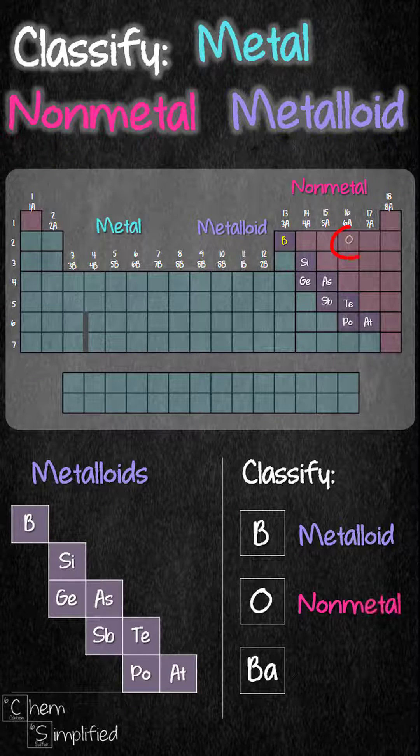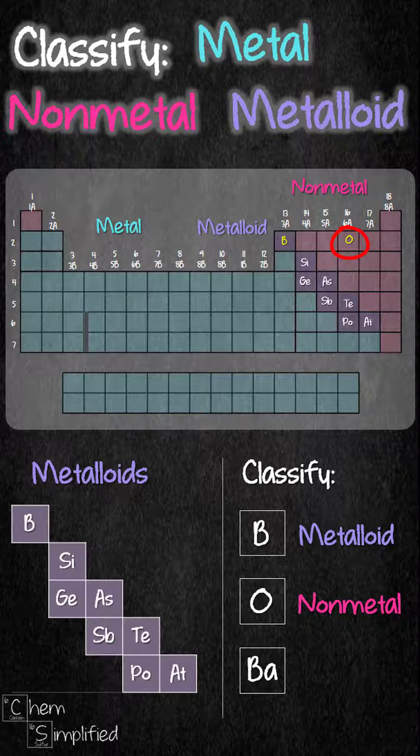O is in group 16 to the right of metalloids and that makes it a non-metal. Ba is in group 2 to the left of metalloids, making it a metal.